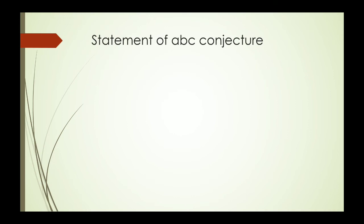Now let's have a look at the statement of the ABC conjecture. If we consider this particular statement, that is a plus b equals c, where a, b, c belongs to whole numbers such that a, b, c are relatively prime and do not share any of the prime factors.